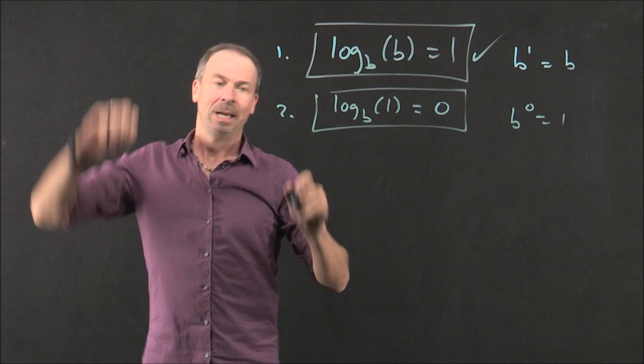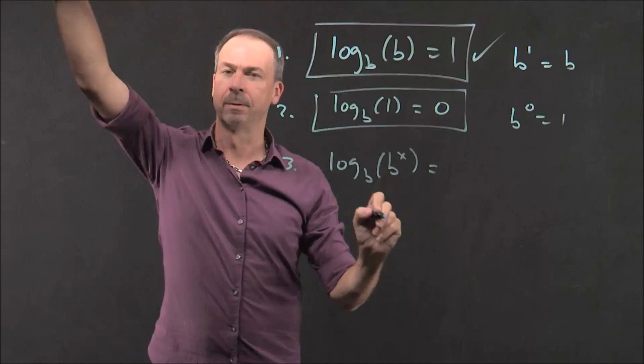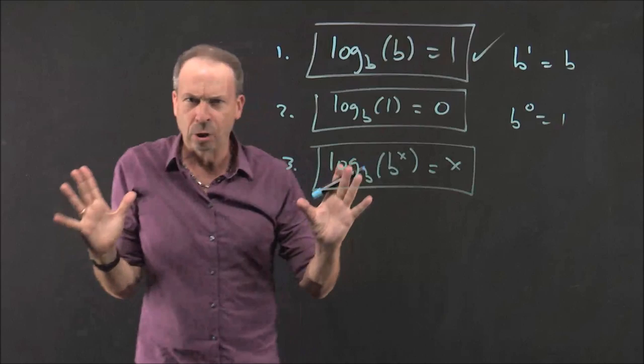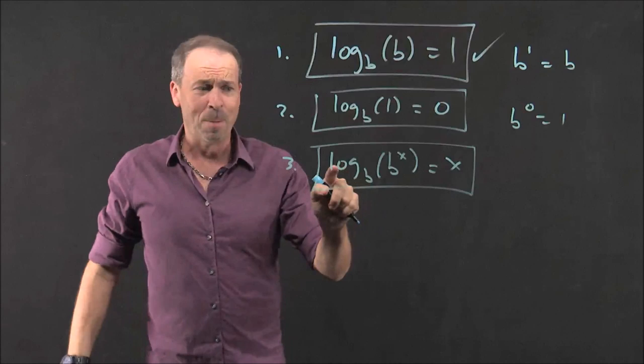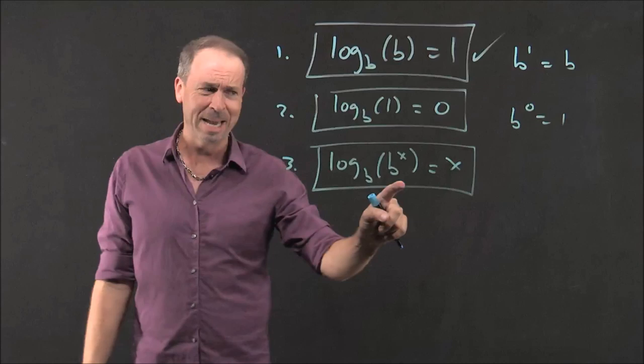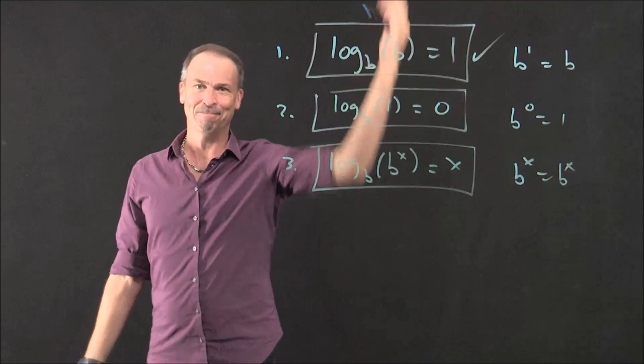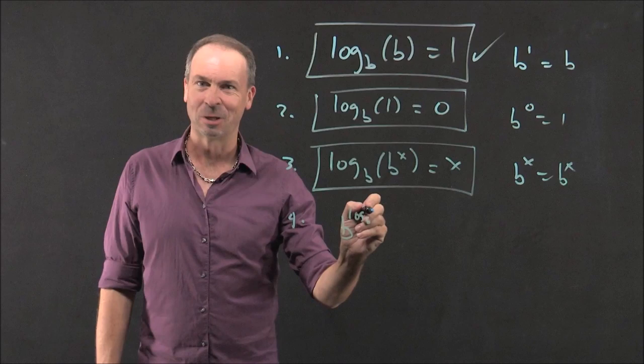Here's another log rule. 3. Log base B of B to the X equals X. All right. Again, this is just tautological. There's actually sort of really no logic here. It's just so tight that it's hard to think your way through it. What power of B gives the answer B to the X? What power of B gives the answer B to the X? Well, X. B to the X gives the answer B to the X. That's it.